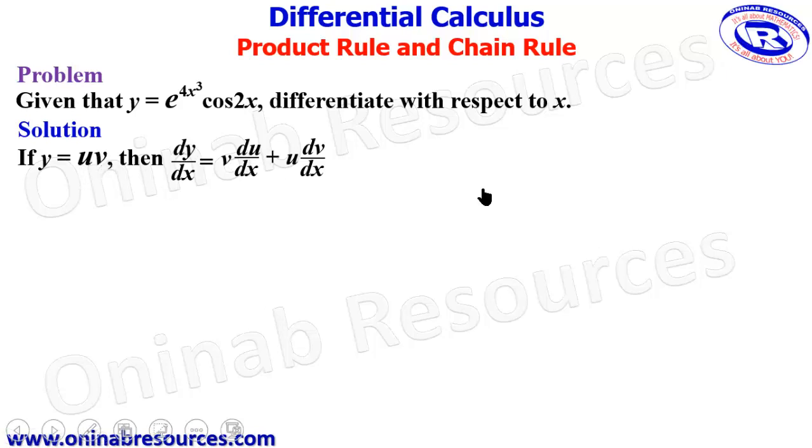That's what we are going to do here. So the order of this u and v does not matter because the connector here is addition. It could be u dv/dx plus v du/dx. So take note of that. And in your solution, whichever you pick as u or v does not matter. It is only in quotient rule that it matters.